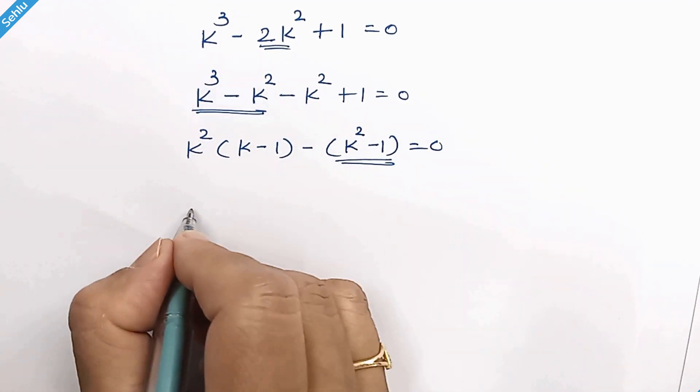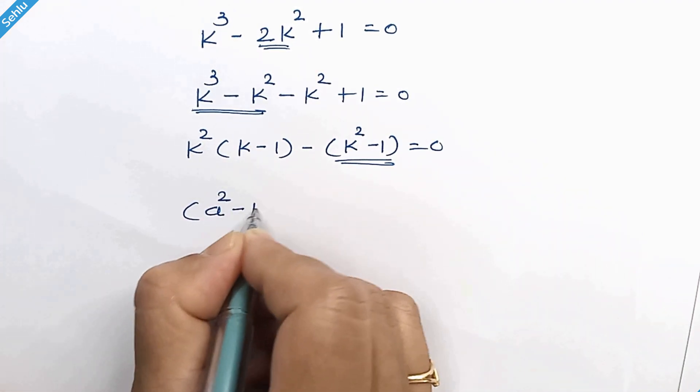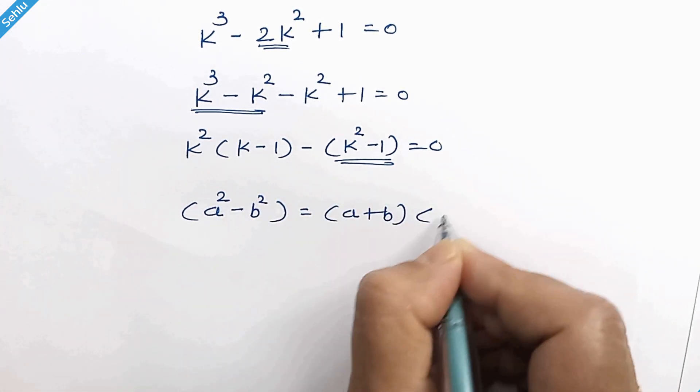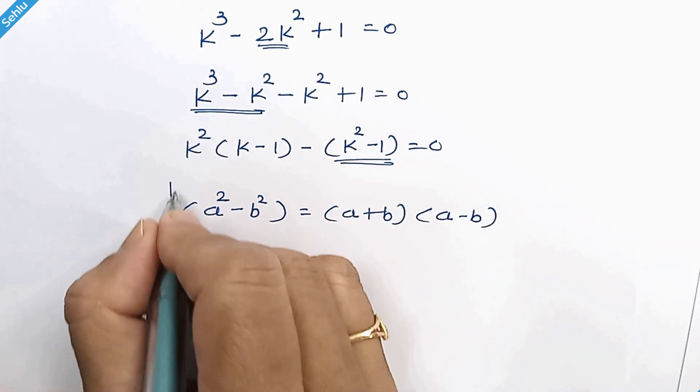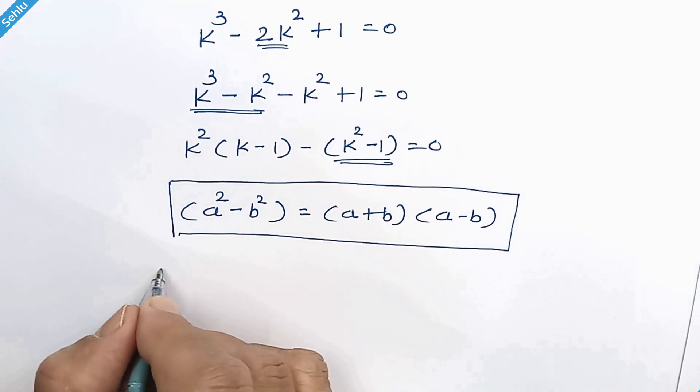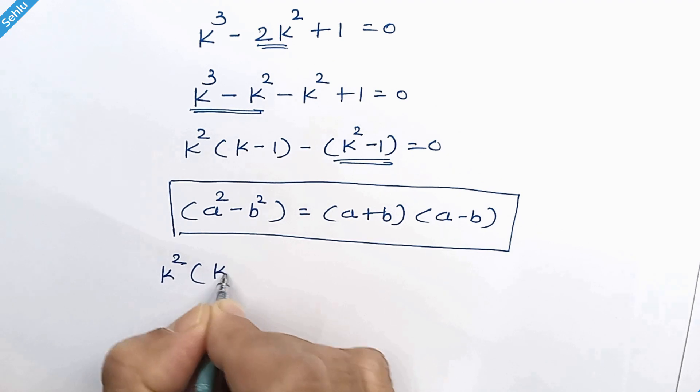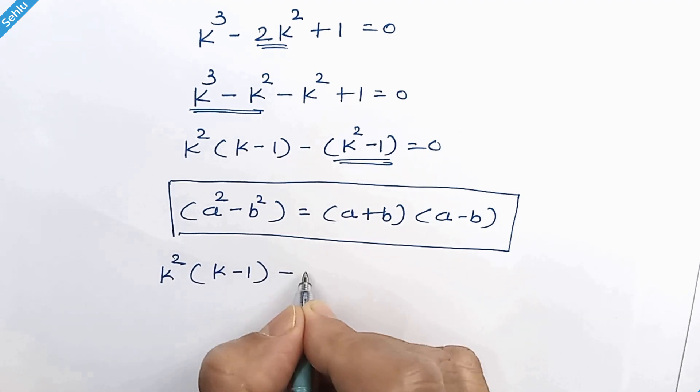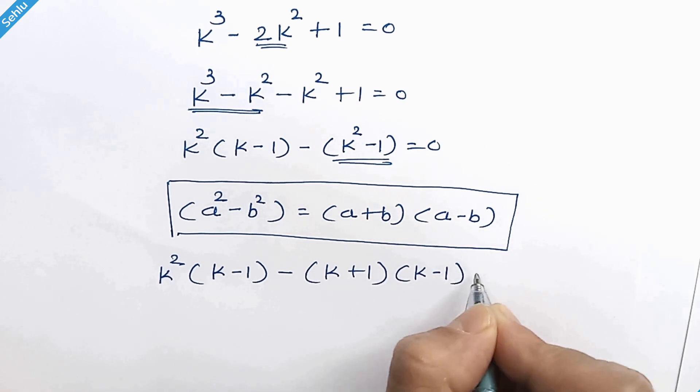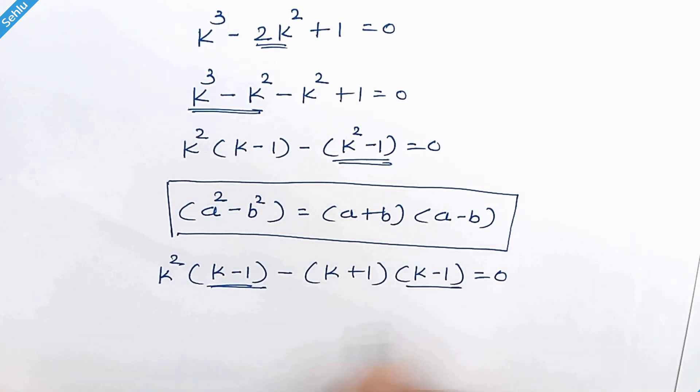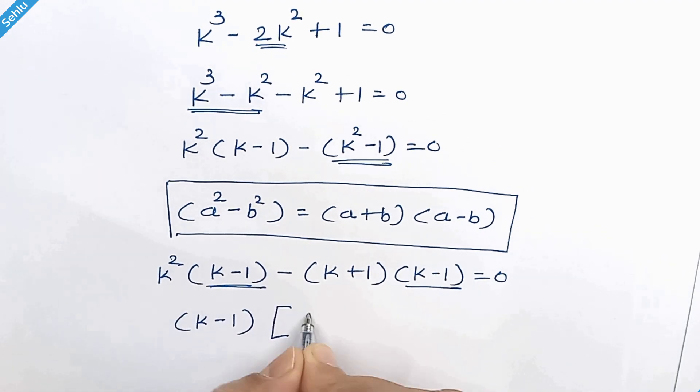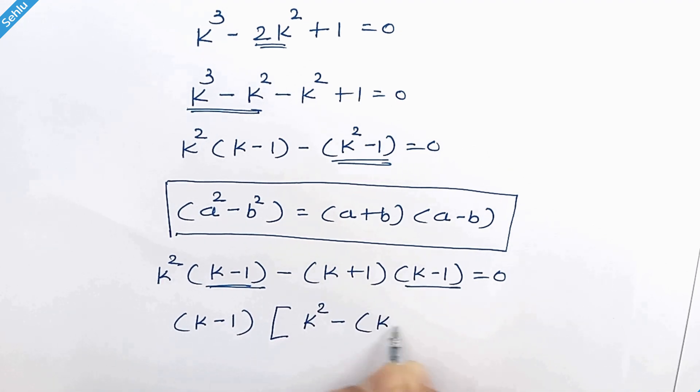And here we will apply an identity which is a square minus b square, then it can be a plus b times a minus b. So here we can write k square times k minus 1 minus k plus 1 times k minus 1. This can be factored out so it will be k minus 1 times k square minus k plus 1.